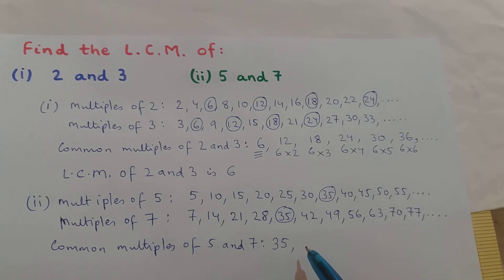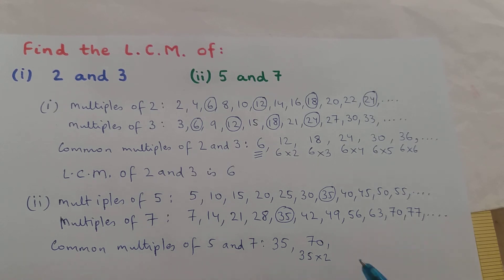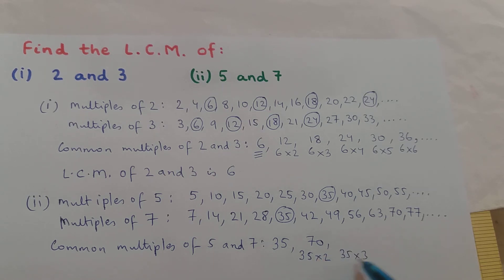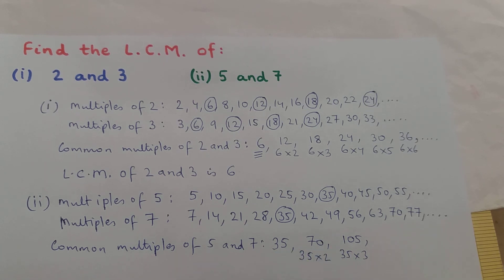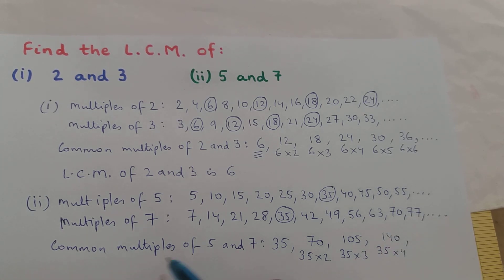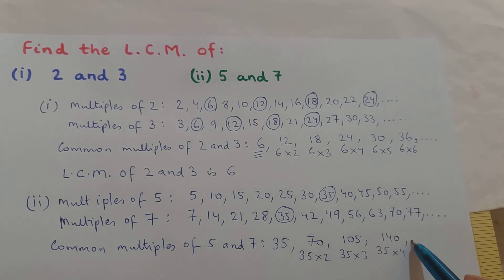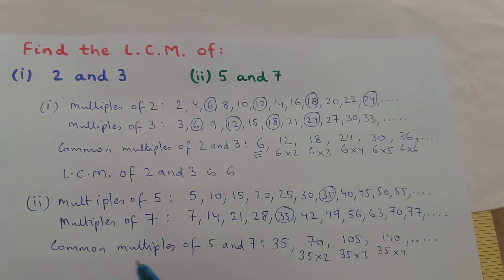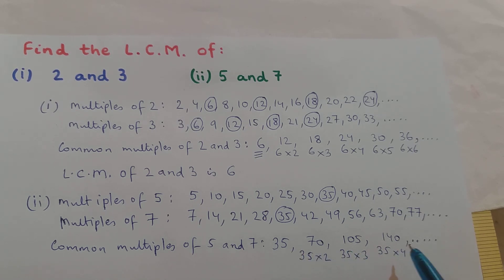The next common multiple of 5 and 7 will be 35×2=70. After 70 it is 35×3=105. After 105 it is 35×4=140, and the list will go on. So a few common multiples of 5 and 7 are: 35, 70, 105, 140, and so on.